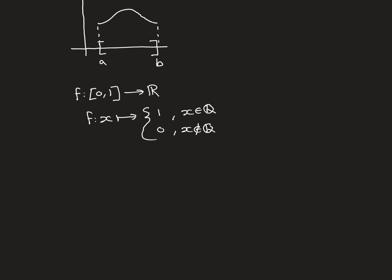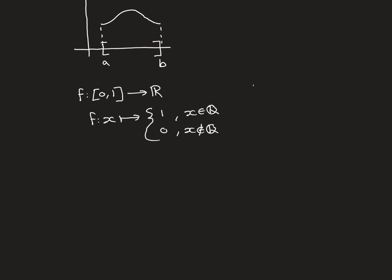If we try to graphically represent this function, here is our codomain axis, here is our domain axis — this is the interval 0 to 1, and this is 1 up here in the codomain axis. Now, there are infinitely many rational numbers in this interval, and there are infinitely many irrational numbers. The size of those infinities differs: there are countably infinitely many rational numbers, and uncountably infinitely many irrational numbers.